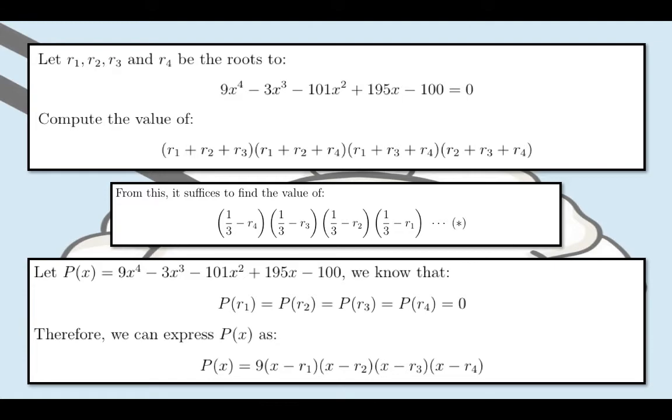By the factor theorem, we can express P of x as follows. P of x equals 9 times x minus r sub 1 times x minus r sub 2 times x minus r sub 3 times x minus r sub 4. Note that we must factor 9 because that is the leading coefficient of the polynomial.